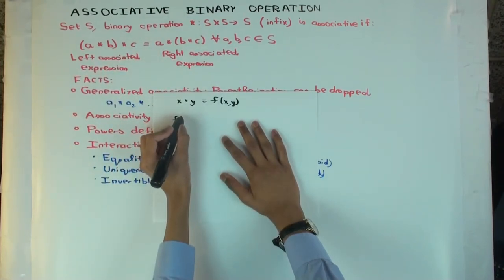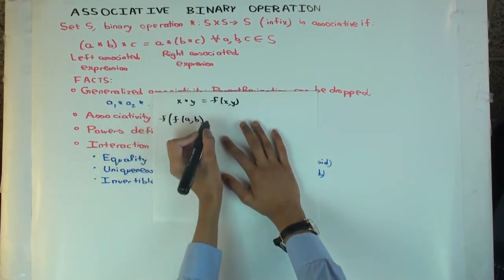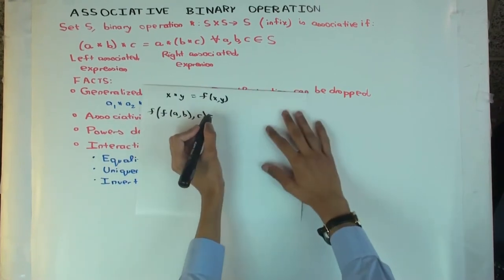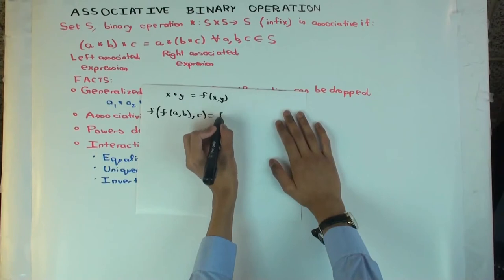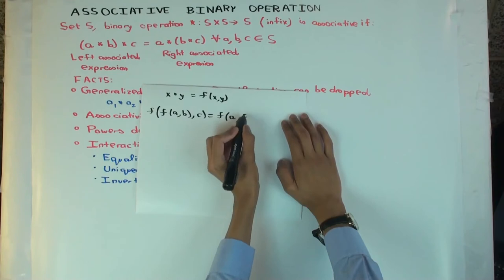F of A, B, now, F of that with C equals what? F of A comma F of B and C.